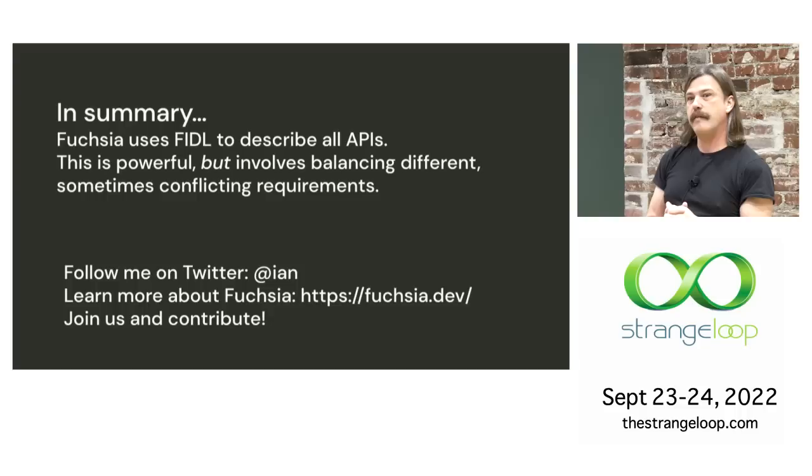Q: Is there any relationship between this IPC system and Mojo, which Chromium uses? The answer is yes. The original higher-level IPC system in Fuchsia was Mojo — a fork of Mojo. We had to change the name because it was getting confusing that there were two things called Mojo that were different, especially when we made Chromium run on Fuchsia. It takes some things from Mojo, but the wire format is not particularly Mojo-like. Chromium on Fuchsia uses Mojo itself for its own internal IPC because it has to be cross-platform — the same way Chromium on Linux doesn't use D-Bus, it uses Mojo.